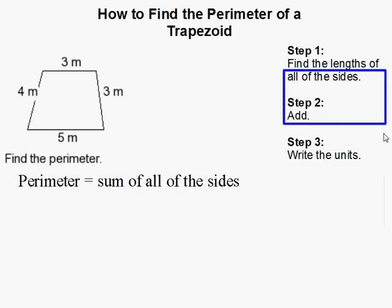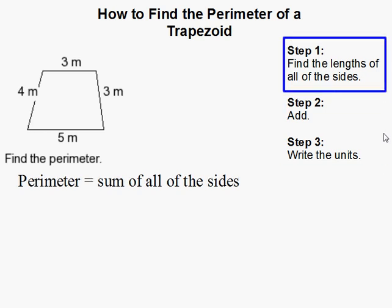How to find the perimeter of a trapezoid. Now recall that perimeter is the sum of all the sides of the shape.